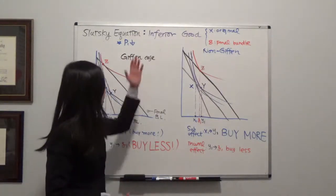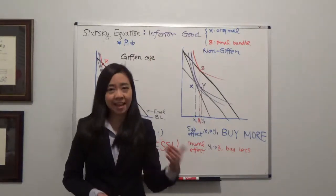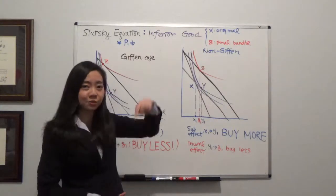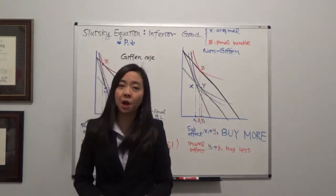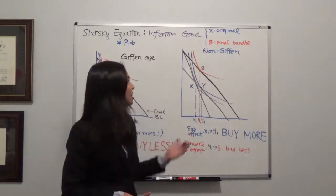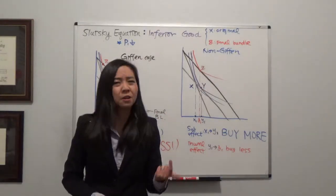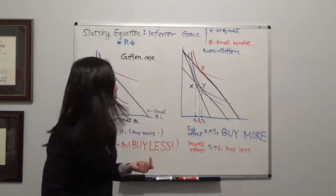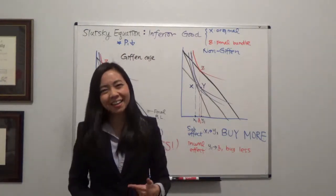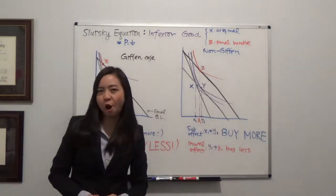But when you have an inferior good, then the income effect is going to go against the law of demand. Why is that? Because the price of good one goes down, the purchasing power has gone up. So the income effect is going to tell you: this good is inferior — now that your purchasing power has gone up, you should buy less. And therefore, when price goes down, the income effect asks you to buy less, so income effect will ask you to violate the law of demand.